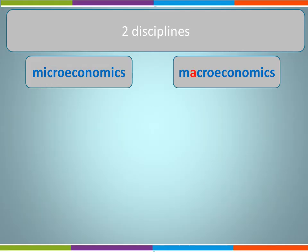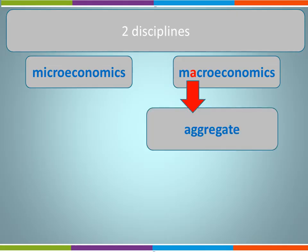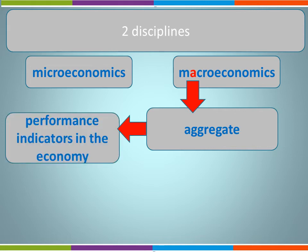Macroeconomics explores economics on a much larger scale — it looks at the impact on the economy as a whole. We refer to macroeconomics as the study of aggregates, so we look at aggregate demand and aggregate supply. Macroeconomics analyses and explores recent and current economic behaviours, and looks at the main performance indicators in the economy as a whole, such as unemployment or economic growth.